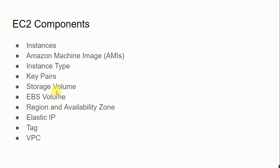EC2 components — as mentioned, EC2 is a core and vast service with many components. The list of components includes: EC2 instance, AMI, instance type, key pairs, storage volume, EBS volume, region, availability zone, elastic IP, tags, and VPC. We will create individual videos for each topic and cover all of them in the further series.